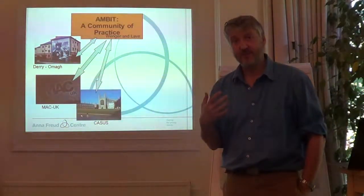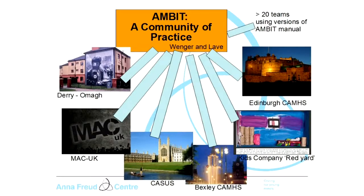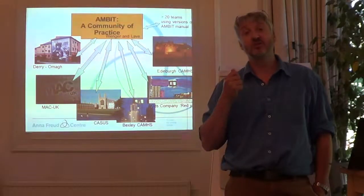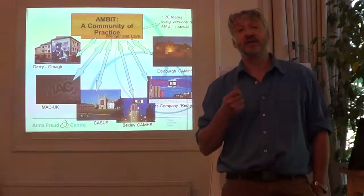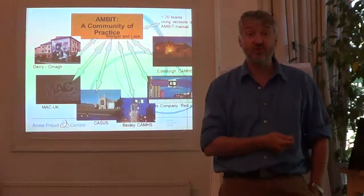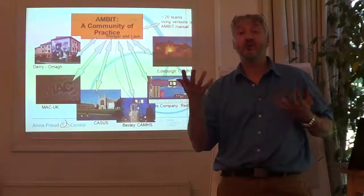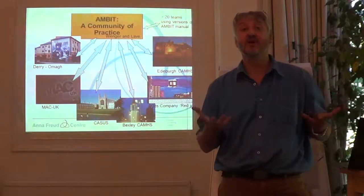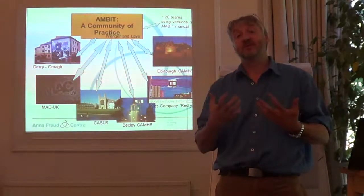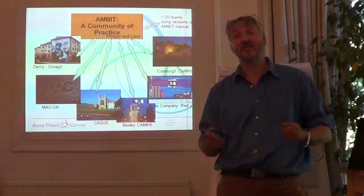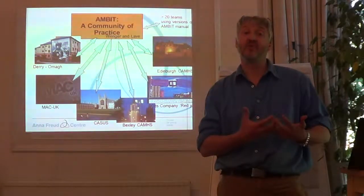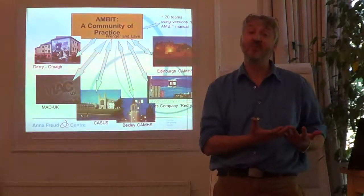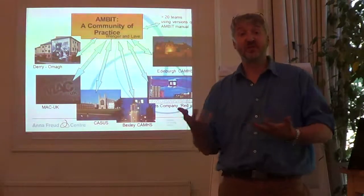One of the things we've tried to focus on in AMBIT is this notion of what Wenger and Lave — two anthropologists — call communities of practice. One of the features of AMBIT is that it tries actively to connect up workers in different settings, different kinds of teams — statutory teams, voluntary sector teams — who are working with, broadly speaking, similar types of groups of young people, and to help these teams share best practice and the street-level innovations they're coming up with.